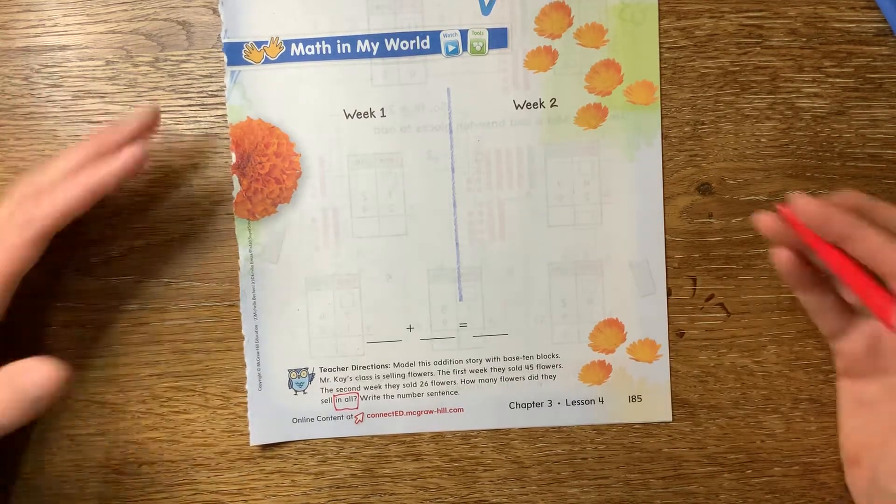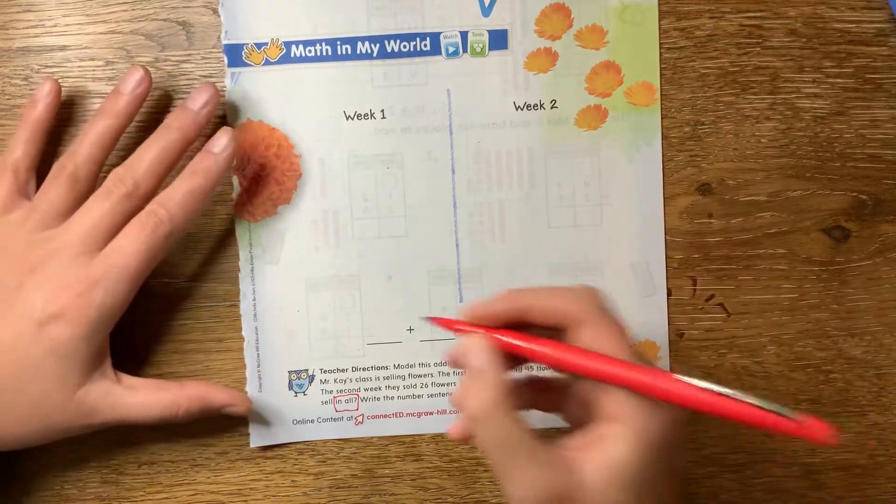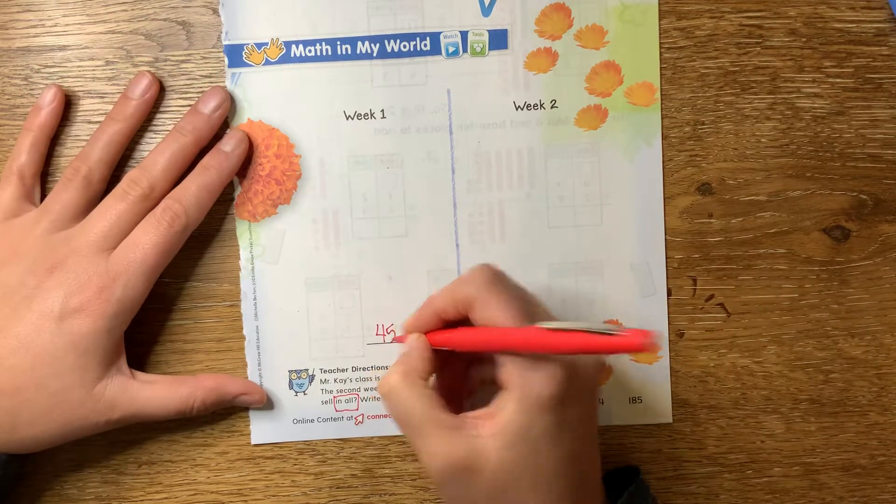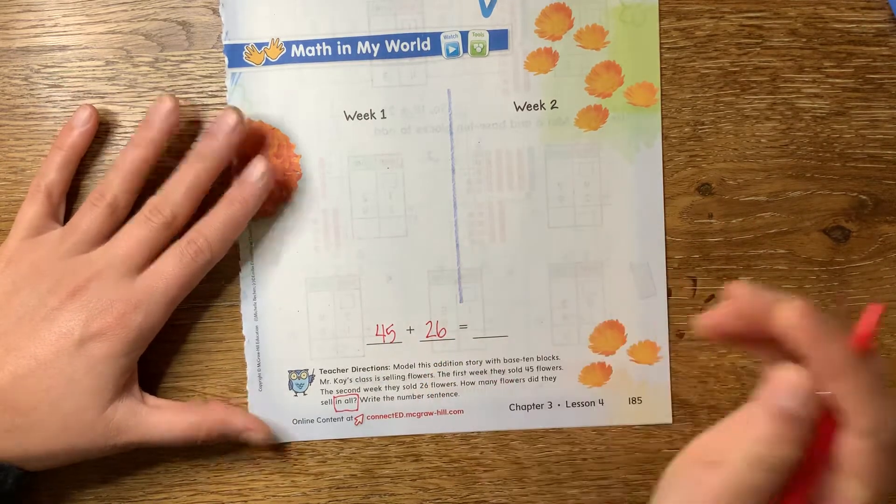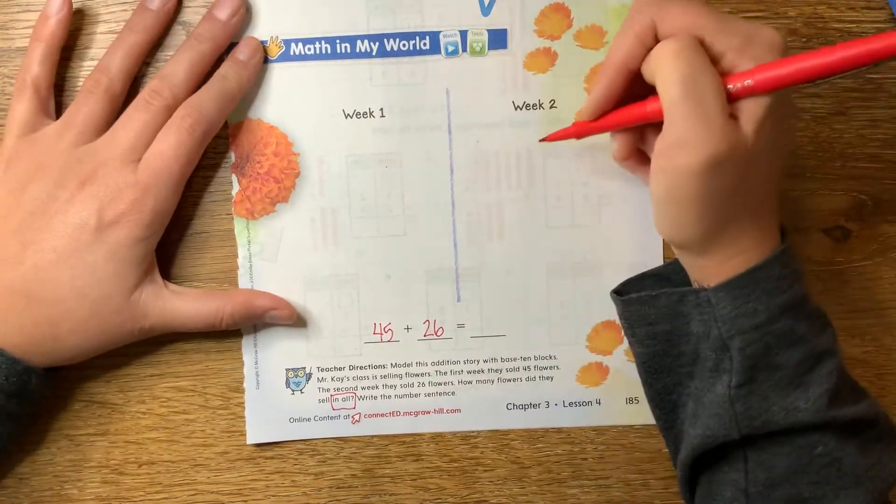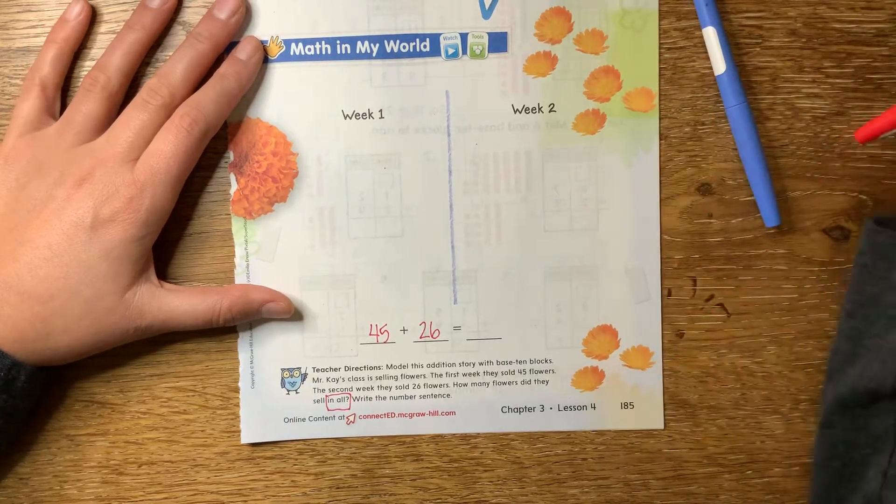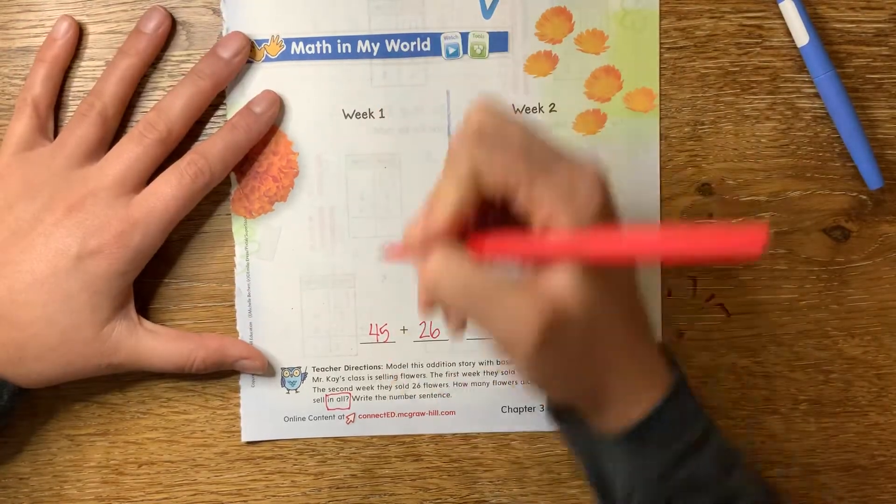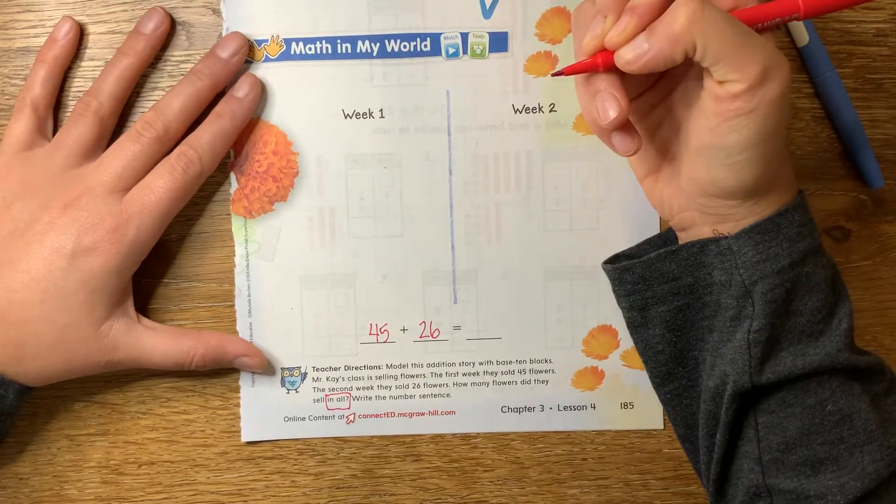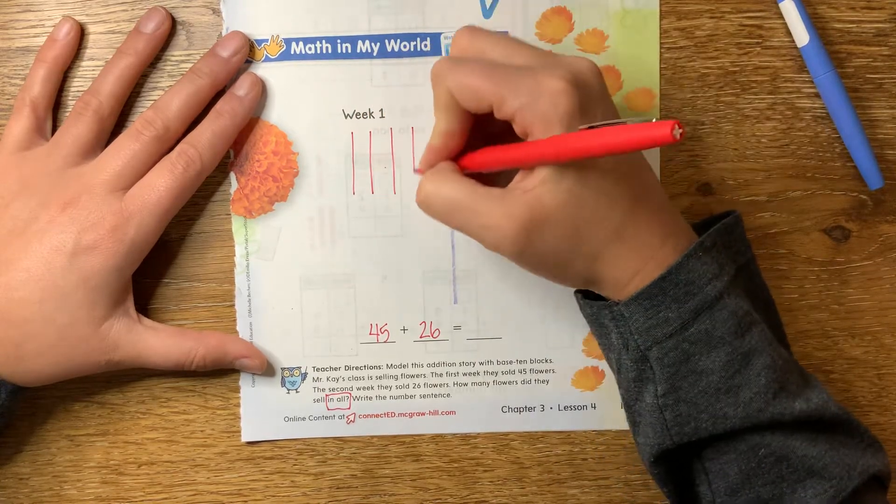Okay, so we are going to show with base-10 blocks what week one and week two looks like. So week one was 45 flowers, and week two was 26 flowers. So let's go ahead and draw that. I'm going to draw my tens in red and my ones in blue, but you can use whatever colors you want, or you can just use your pencil. All right, so I'm going to draw how many tens do I draw for 45? I draw four tens. One, two, three, four.